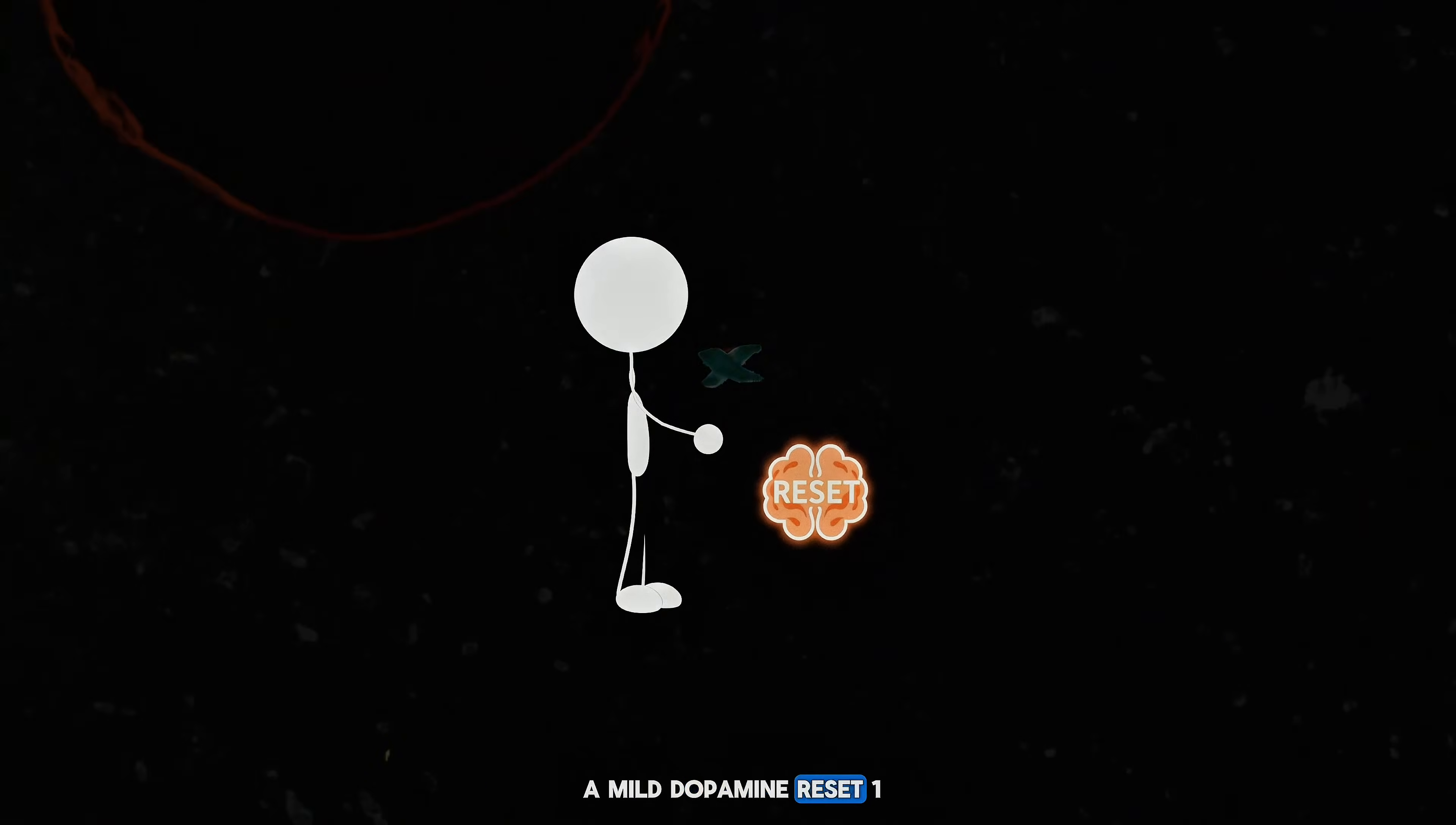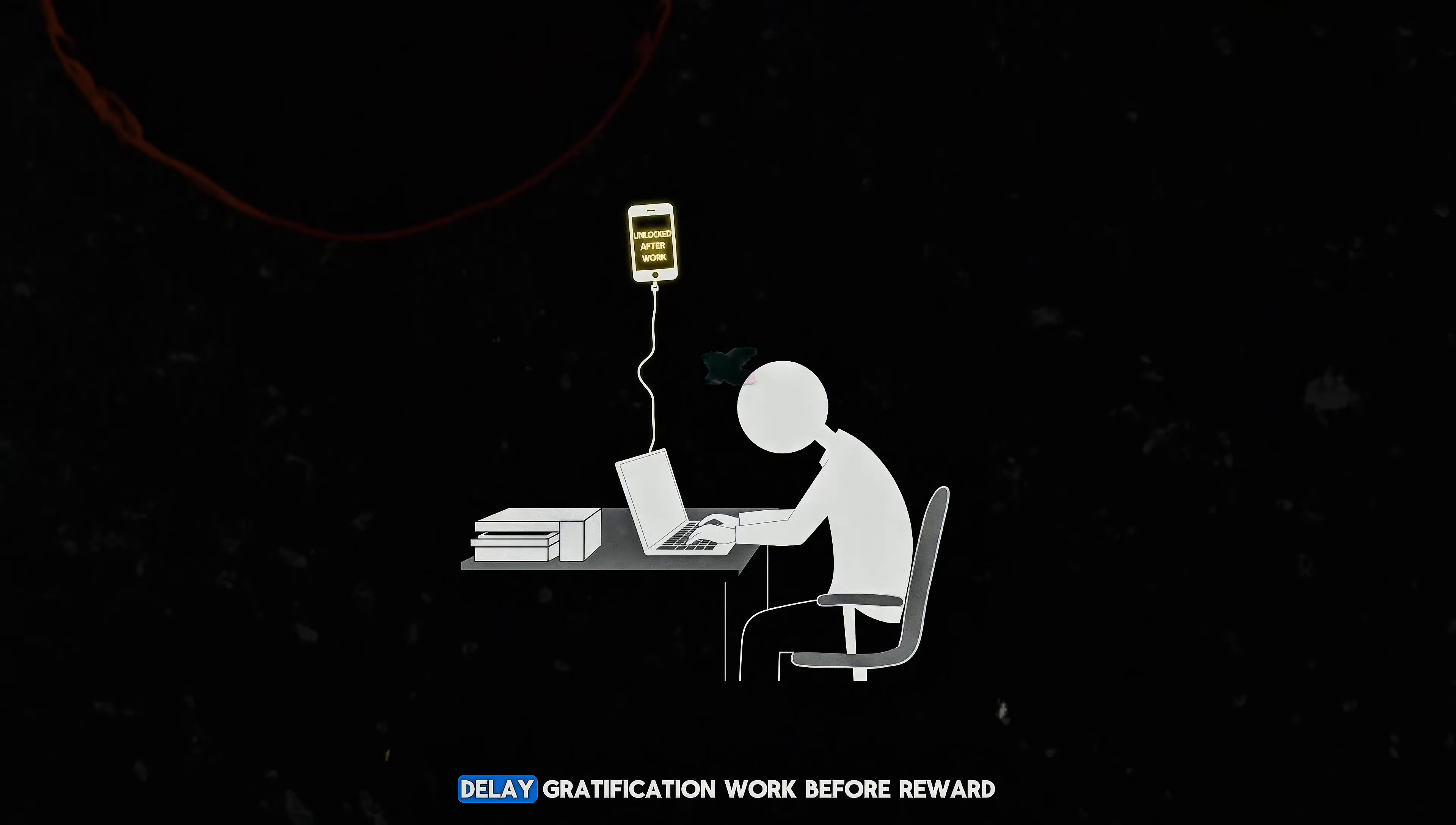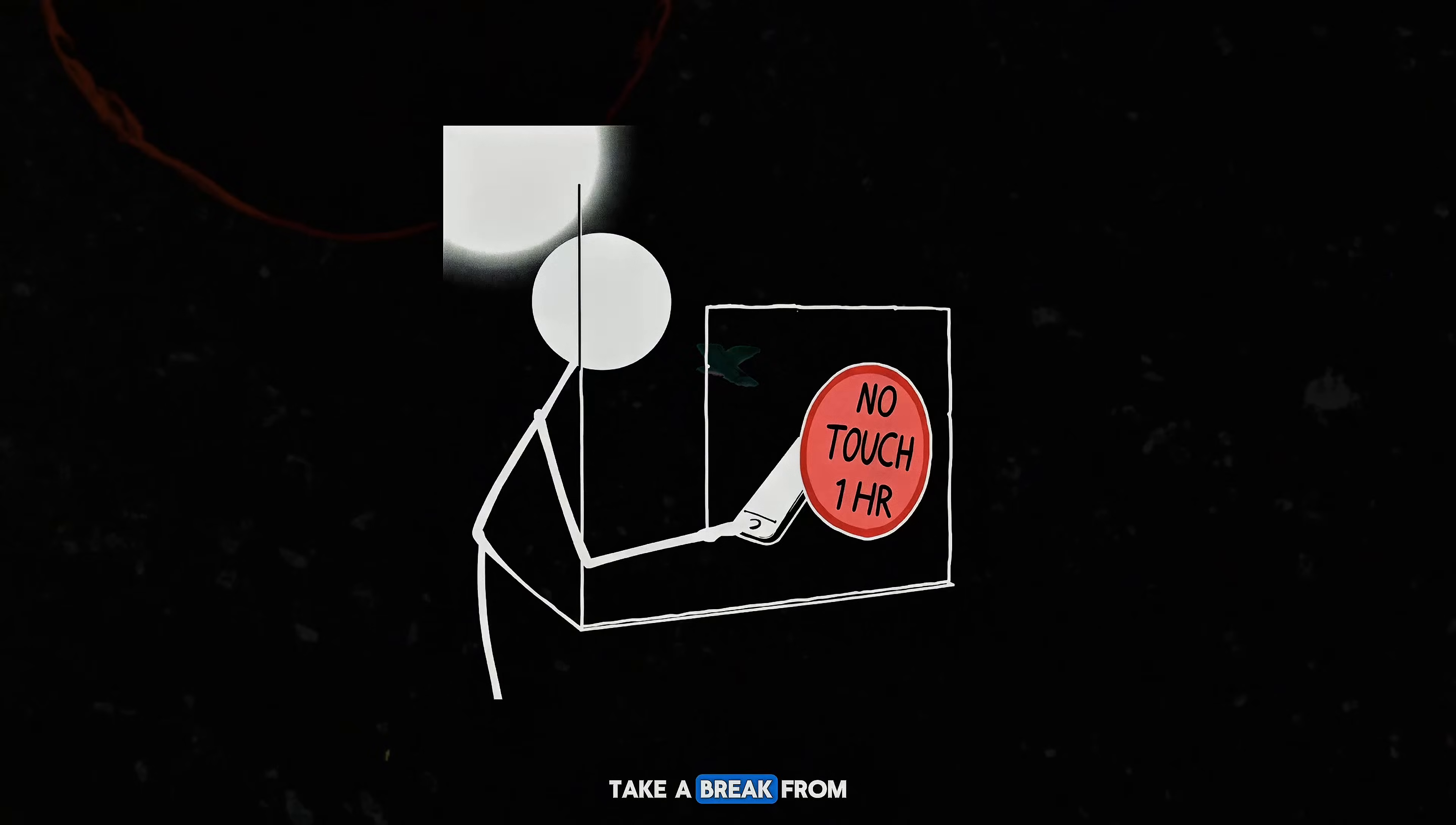Here's how to hit a mild dopamine reset. One, delay gratification. Work before reward. Do the boring task, then scroll. Two, take a break from quick hits. One hour, no phone. You'll survive. Probably.